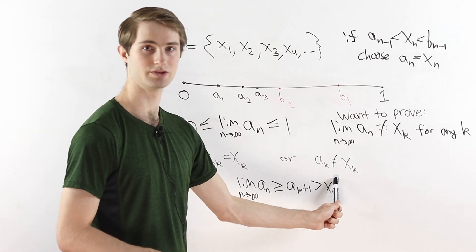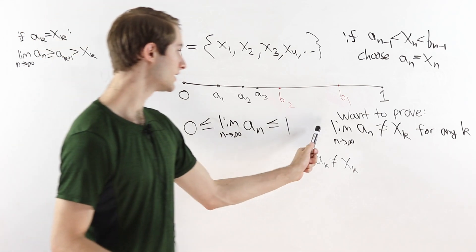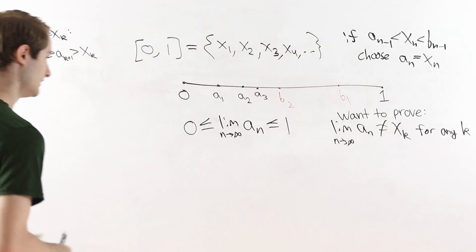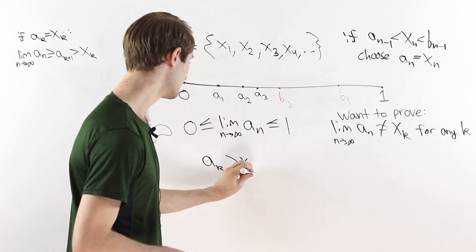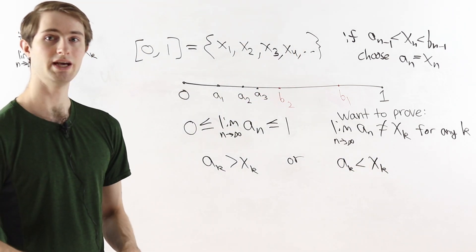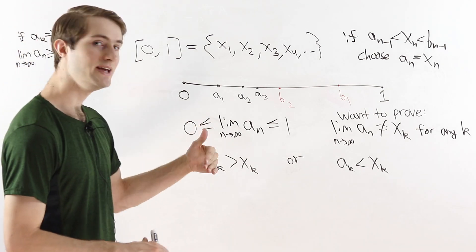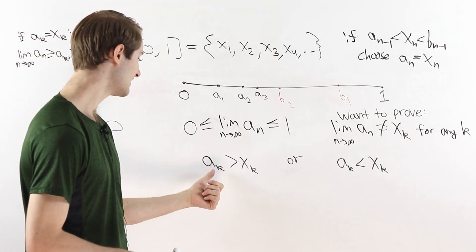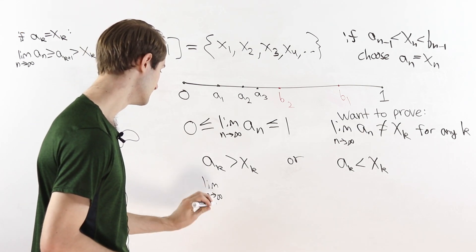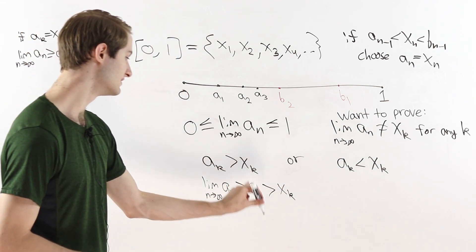Now we consider the case where A_k does not equal x_k. This splits into two sub-cases: either A_k > x_k or A_k < x_k. The first sub-case, A_k > x_k, is straightforward: since A_n is increasing, all terms after A_k are greater than A_k, which is greater than x_k. Therefore the limit of A_n is greater than or equal to A_k, which is greater than x_k, so the limit does not equal x_k.